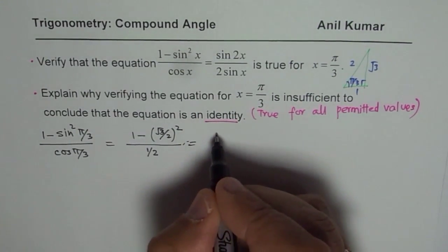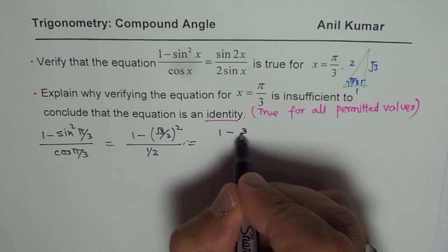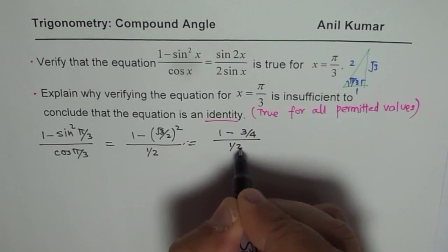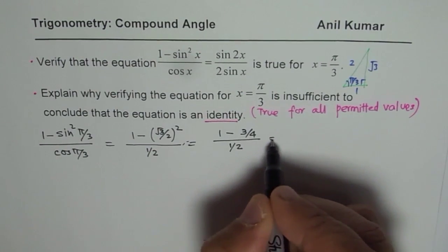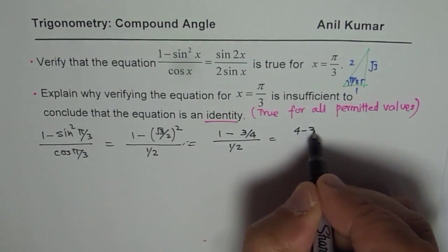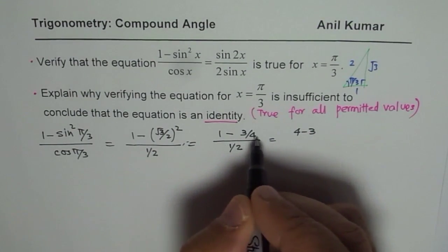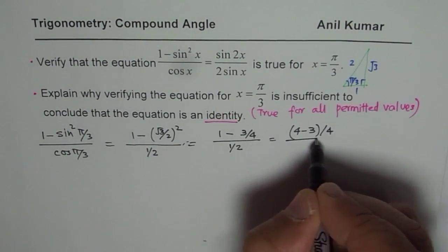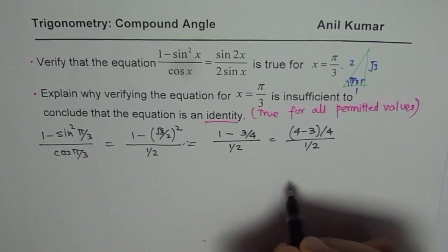So we could simplify this and write (1 - 3/4)/(1/2). This could be written as (4 - 3)/4, taking common denominator as 4, divided by 1/2.